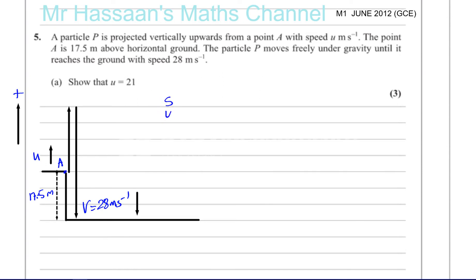We're going to write down what we know using the SUVAT equations: displacement, initial velocity, final velocity, acceleration, and time. It's always a good idea to write this down so we can record all the information we know, then decide which equation of motion to use, because we're dealing with constant acceleration due to gravity.